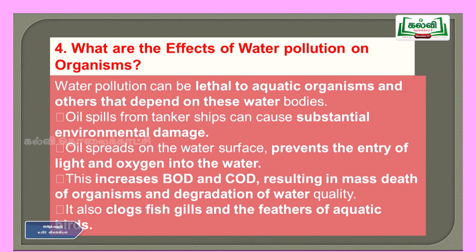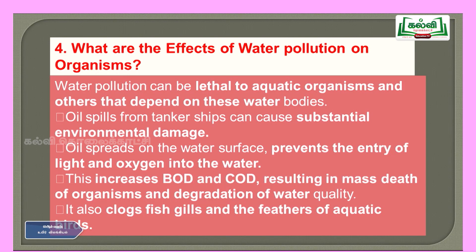Fourth question: what are the effects of water pollution on organisms? Water pollution can be lethal to aquatic organisms and others that depend on water bodies. For example, oil spills from tanker ships cause substantial environmental damage — they float on water and prevent atmospheric oxygen from entering, causing oxygen deficiency. As days pass, aquatic animals die due to insufficient oxygen. Oil spills also increase BOD and COD, resulting in mass death of organisms and degradation of water quality.